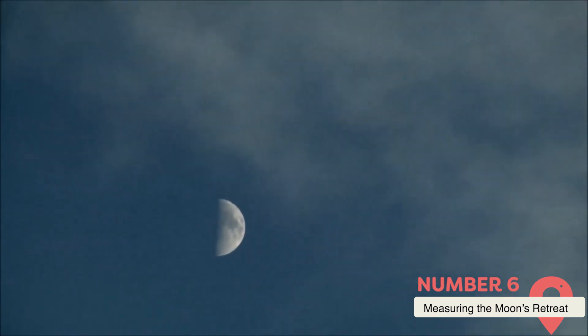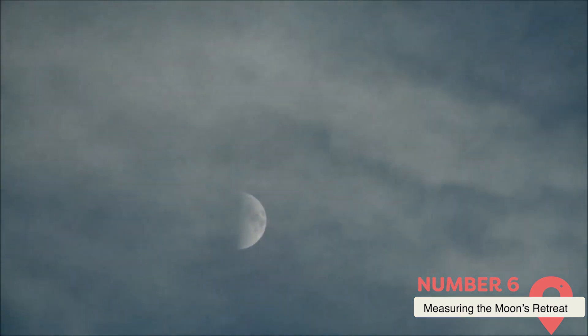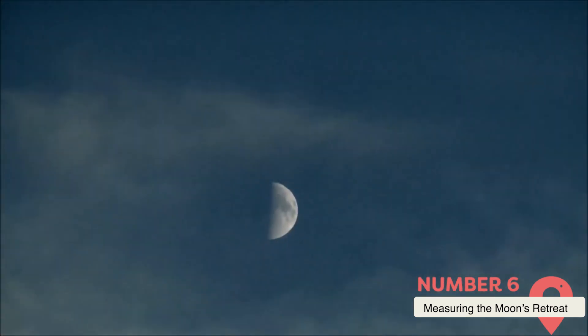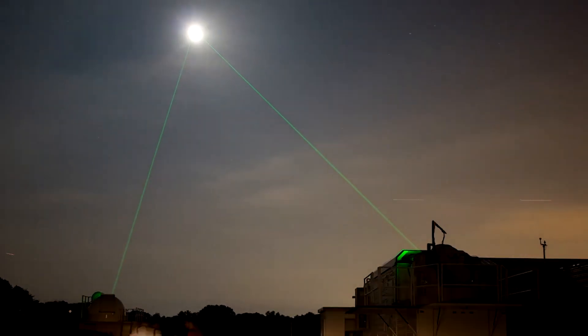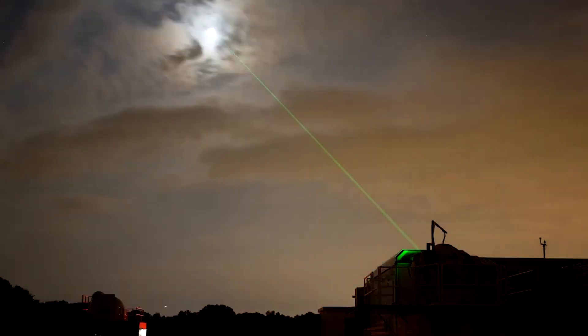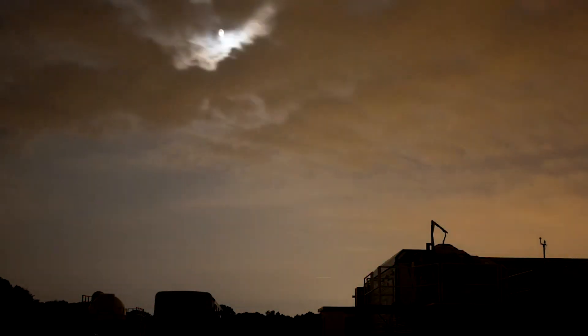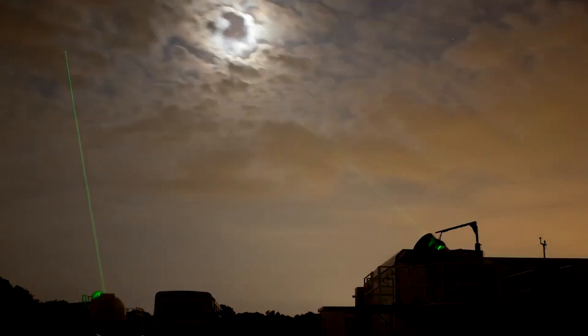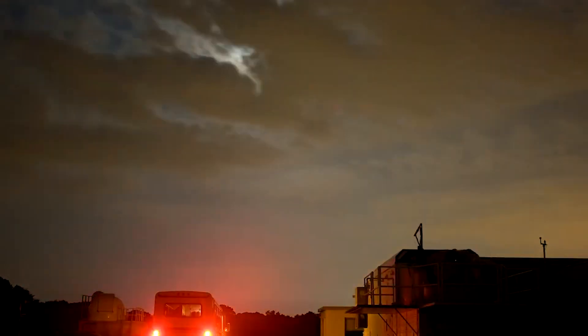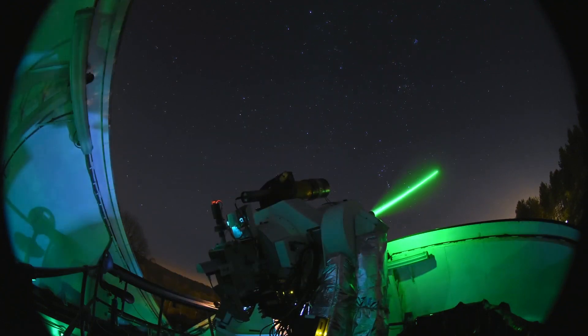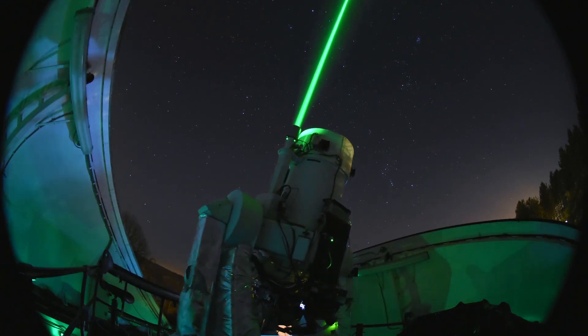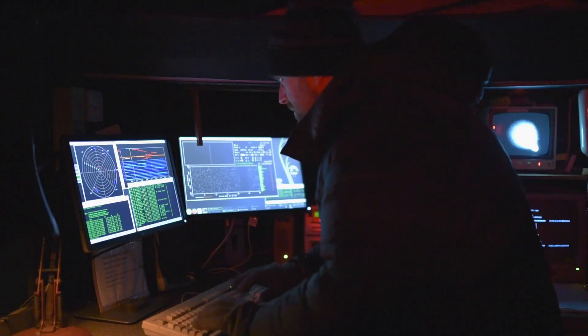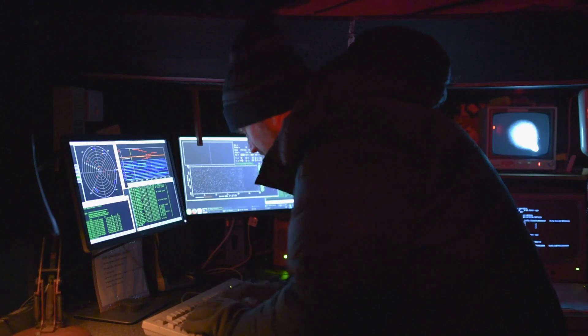Measuring the Moon's Retreat. The discovery of the Moon's gradual retreat is a testament to the precision of modern scientific instruments. The primary method for measuring this recession is called lunar laser ranging. This technique involves firing laser pulses at reflectors left on the Moon's surface by Apollo astronauts and Soviet lunar rovers. By measuring the time it takes for the laser pulses to return to Earth, scientists can calculate the Moon's distance with incredible accuracy, down to just a few centimeters. This ongoing experiment, which has continued for over 50 years, has provided invaluable data about the Moon's orbit and the dynamics of the Earth-Moon system.